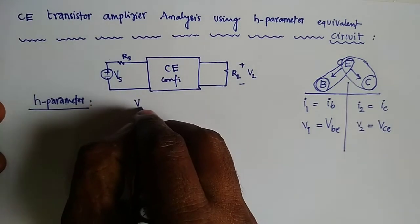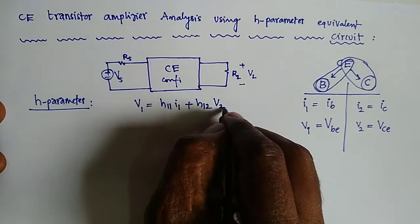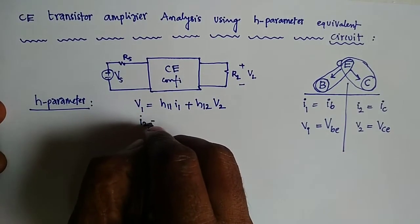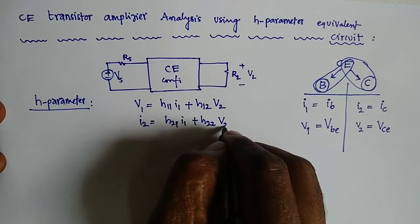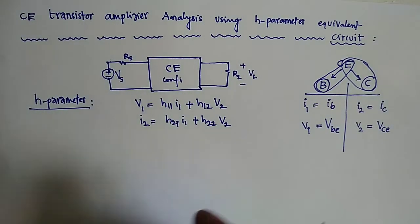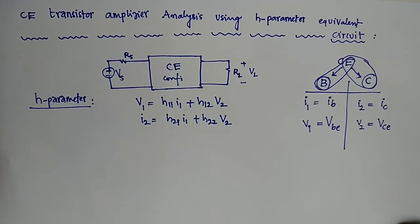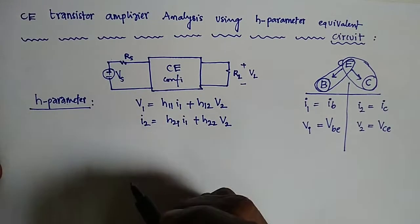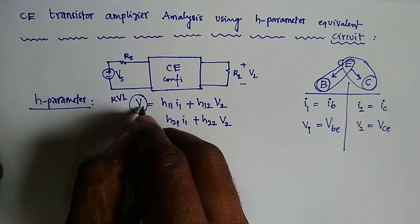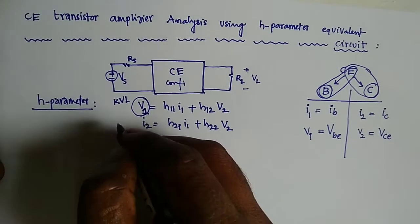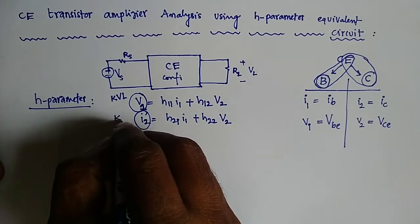The H parameter basic equations are: V1 = H11·I1 + H12·V2, and I2 = H21·I1 + H22·V2. To design the small signal hybrid model based on these input and output values, we apply KVL at the input port because we have V1 on the left side. If the left side source is current, we apply KCL at the second port.